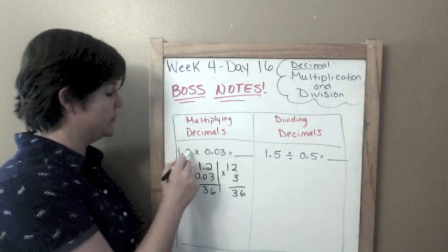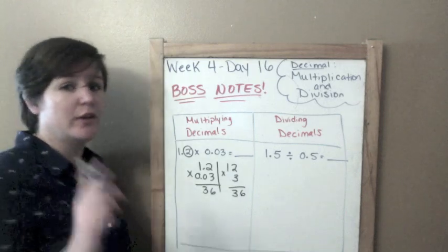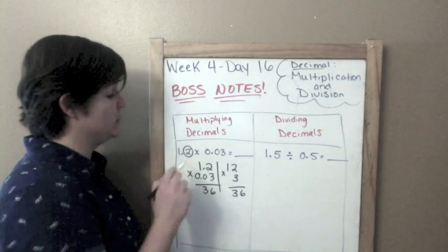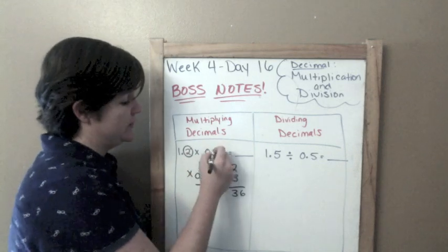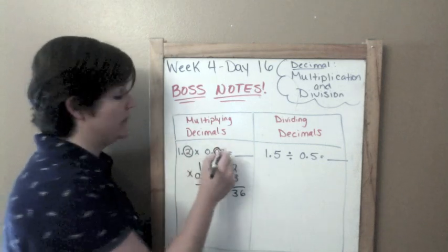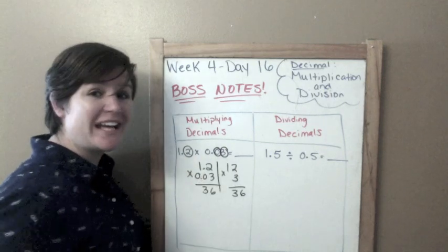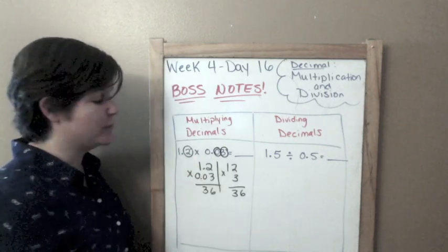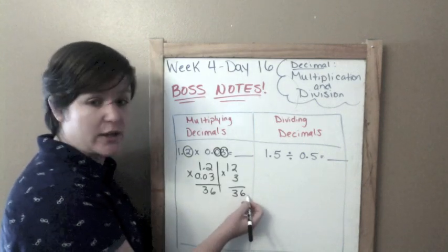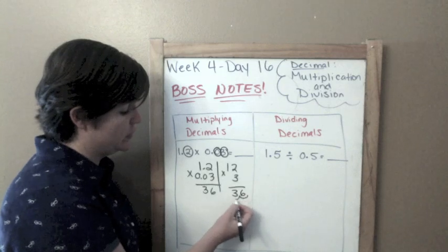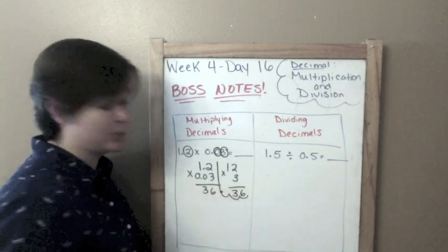However many digits are behind the decimal, you've got to count that up because you're going to use that number. So we've got a 2 there behind the decimal, we've got a 0 behind the decimal, and we have a 3 behind the decimal. So we have a total of 1, 2, 3 digits behind the decimal. So what you do is you pretend like your decimal is right here in your product, and you go 1, 2, 3. And that is where your decimal is going to be.